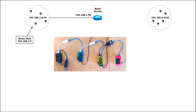On this router — the thing doing the routing — it has an interface on the 192.168.2.0 network as well. So the black router, which is the black Raspberry Pi, has two network interfaces and each one is part of a different network. We can forward packets between those networks and it becomes a router. As long as hosts on each network know they've got to go through the router's IP address to get to the other one, they can talk to each other. So the 192.168.1.0 network knows it has to go via 192.168.1.46.